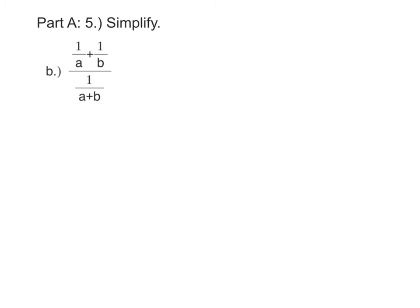So again, when we have this complex fraction, what you should do first is identify where is that division symbol, that fraction bar that's in the middle. And it's right there. So we'll rewrite this complex fraction as numerator 1 over a plus 1 over b divided by denominator 1 over a plus b.